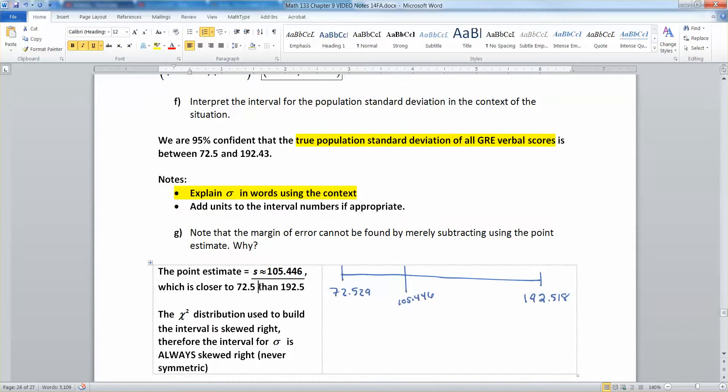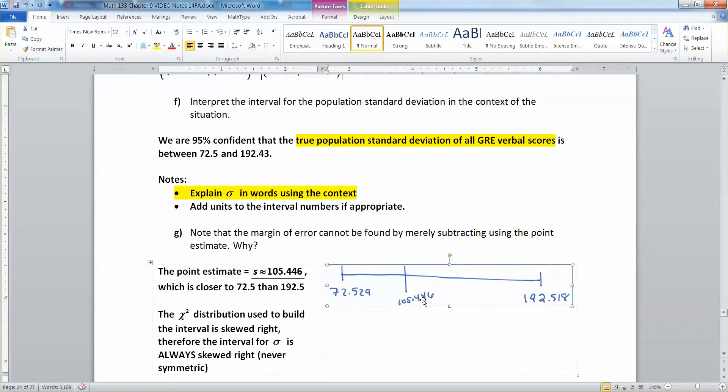It's actually closer to the left-hand side than to the right-hand side. I've drawn a little picture here for you. So here's 105, but it's not in the center. It's over on the left-hand side. And that's because the distribution used to build this interval skewed right. It's the chi-square distribution.